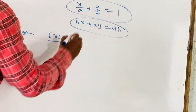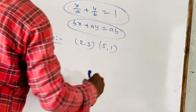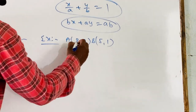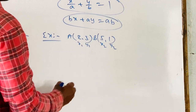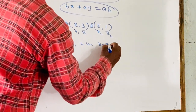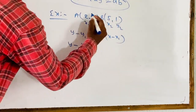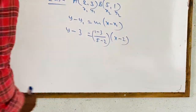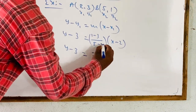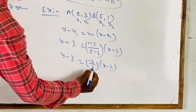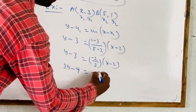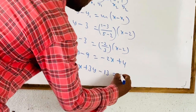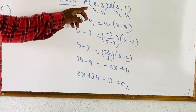For example, given points (2, 3) and (5, 1), find the equation of the line. Using y − y₁ = m(x − x₁): y − 3 = [(1 − 3)/(5 − 2)] × (x − 2), which gives y − 3 = (−2/3)(x − 2). Multiplying through: 3y − 9 = −2x + 4. Rearranging: 2x + 3y − 13 = 0. This is the equation of the line passing through the two given points.